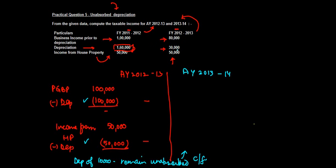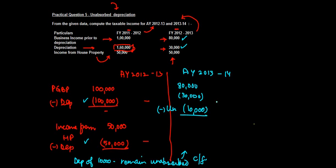In assessment year 2013-14, the business income prior to depreciation is eighty thousand. Current year depreciation is thirty thousand, and unabsorbed depreciation of ten thousand is also deducted. The entire unabsorbed amount is absorbed, giving income of forty thousand under profits and gains of business and profession.